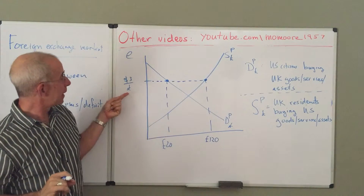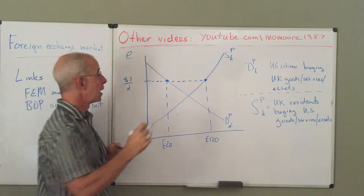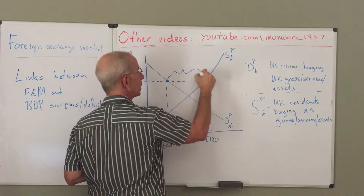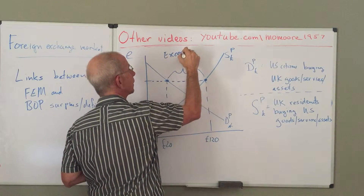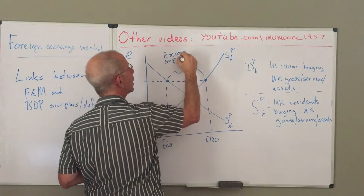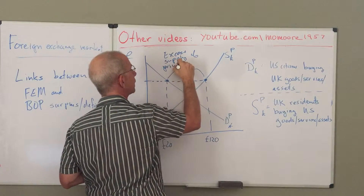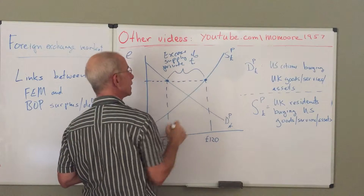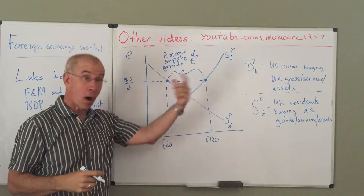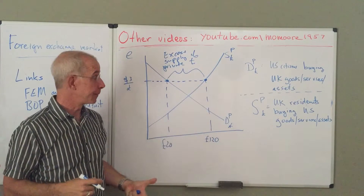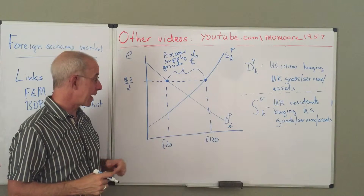And following on to the earlier example, we have an excess supply of private pounds at this exchange rate. The 120 pounds offered exceeds the demand.